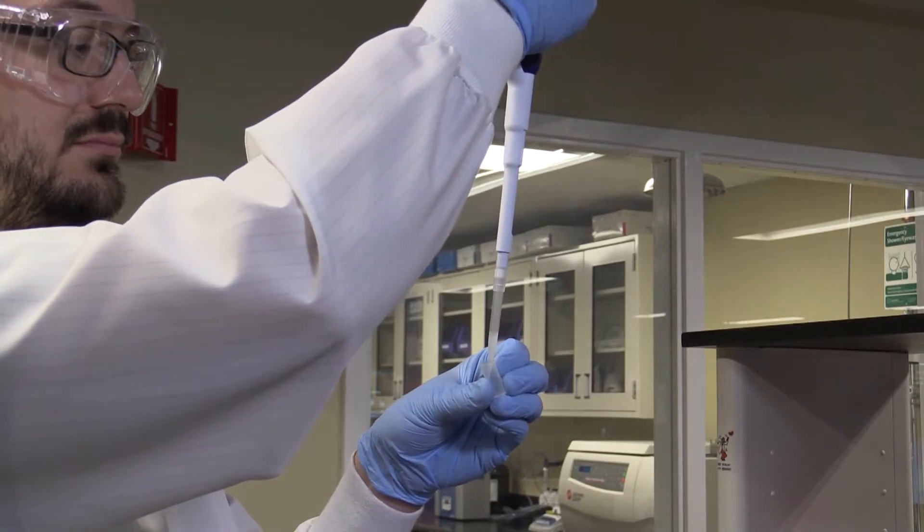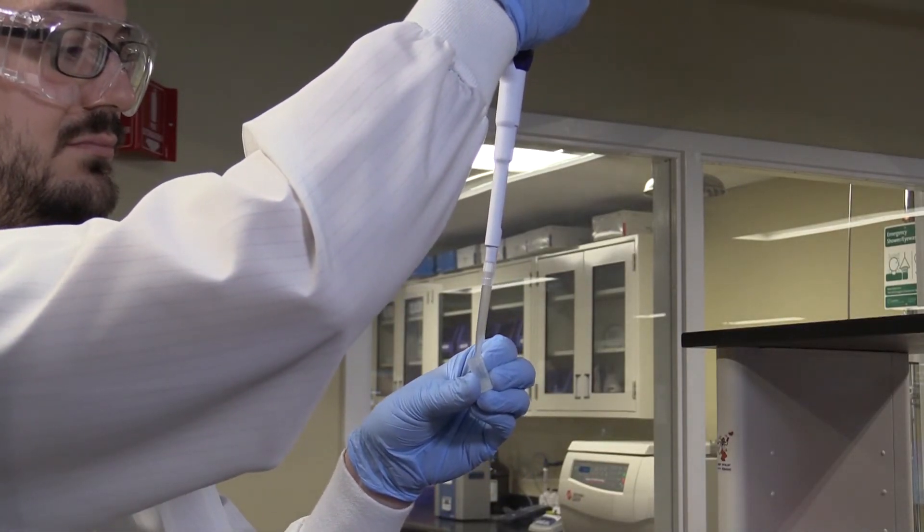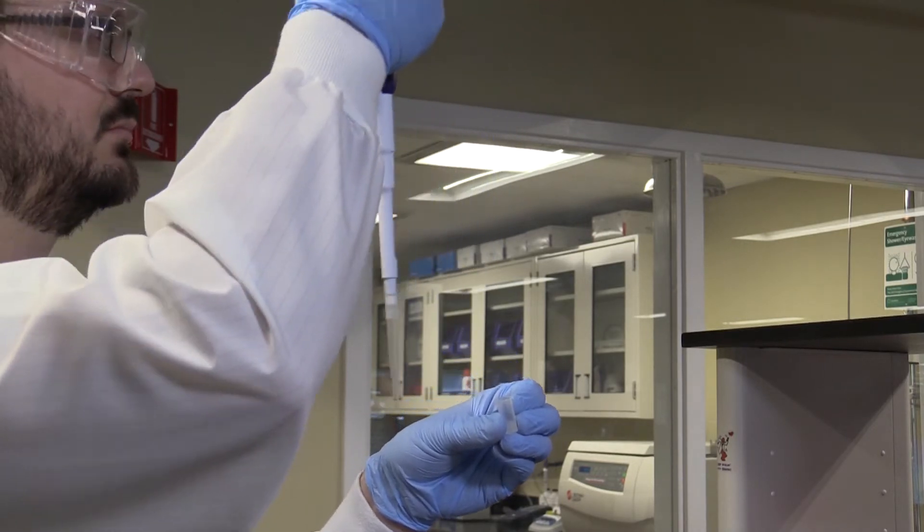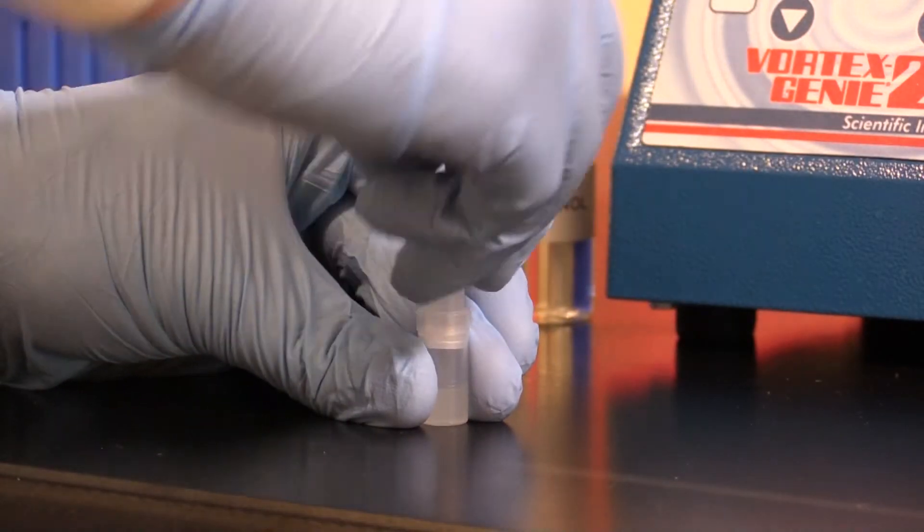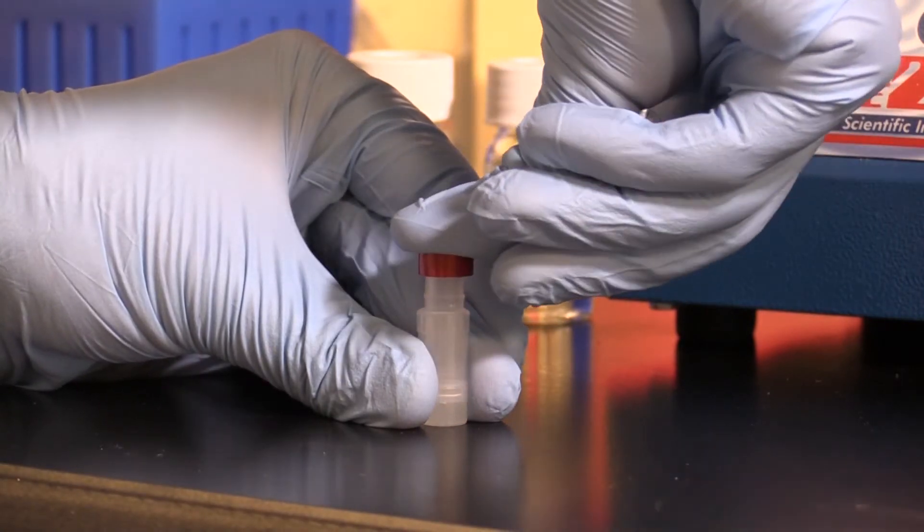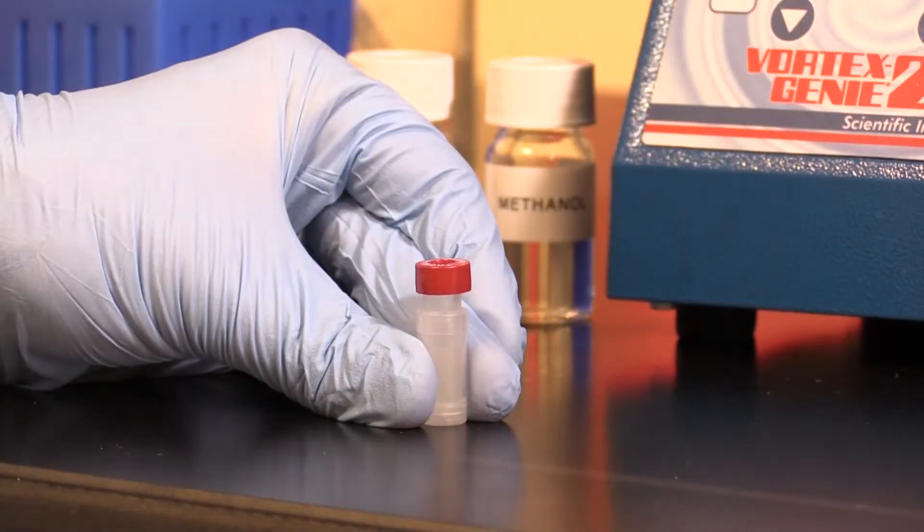Place 400 microliters of the sample extract into a Thompson single-step filter vial. Then place the plunger inside the filter vial and depress it to filter the sample extract. This allows the sample extract to pass through the membrane, filtering out particulates.